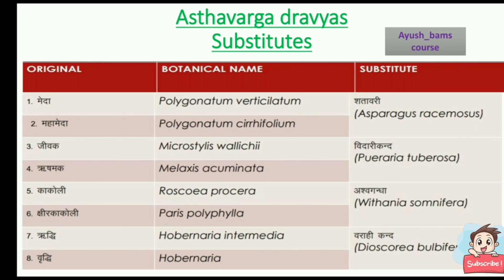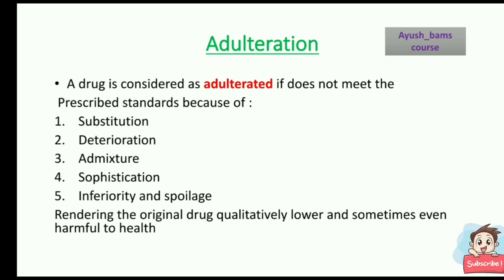Ashtavarga dravyas substitutes: Ashta means eight, so for the eight drugs we use substitutes. For Meda and Maha Meda, we use Shatavari. For Jivaka and Rishabhaka, we use Vidharikanda. For Kakoli and Kshirakakoli, we use Ashwagandha. For Riddhi and Vriddhi, we use Varahikanda.